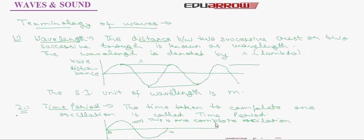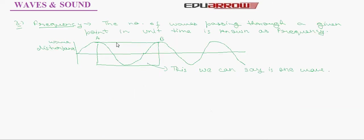Now third is frequency. The number of waves passing through a given point in unit time is known as frequency. In this figure, the enclosed portion is known as one wave. And the number of such waves that pass through a given point in one second is actually frequency.